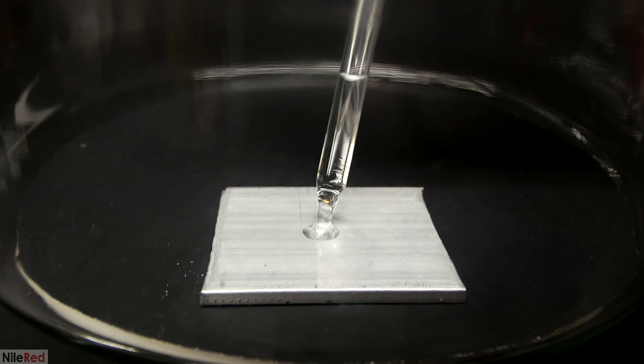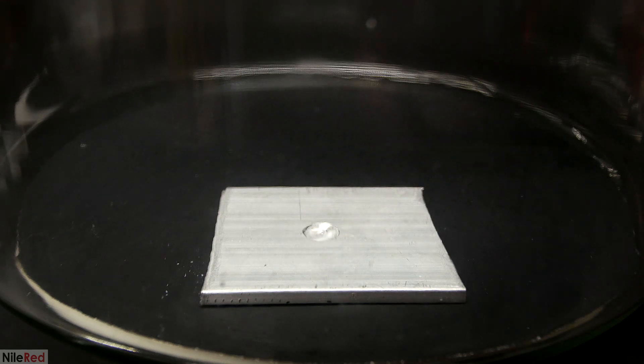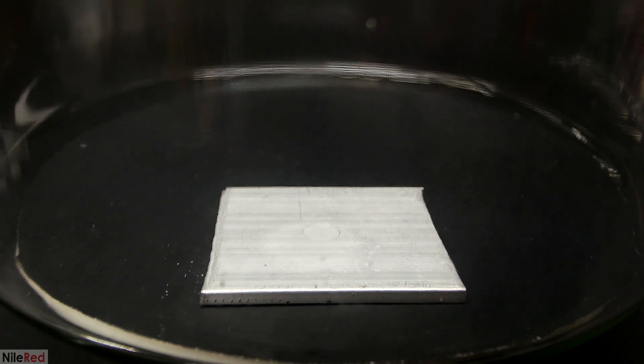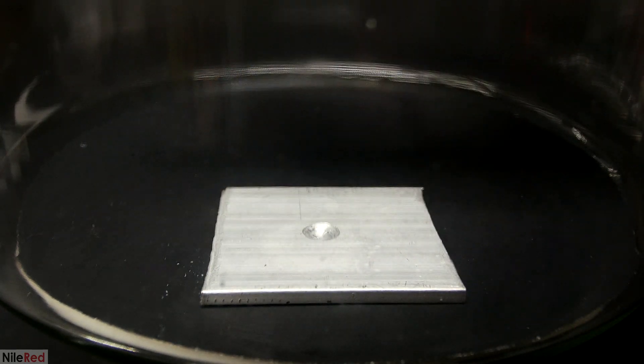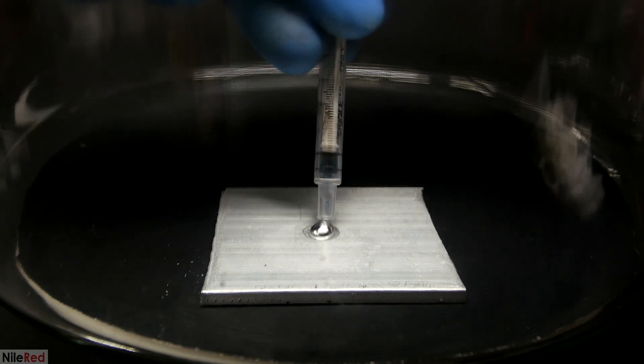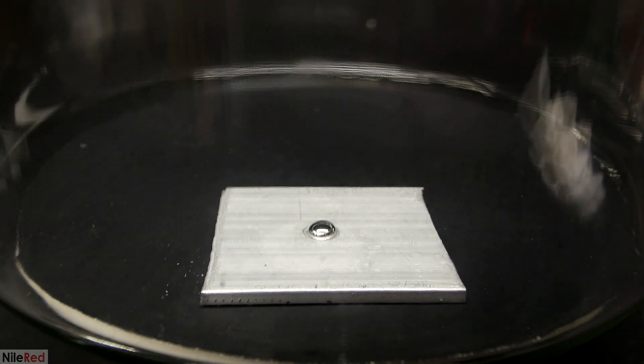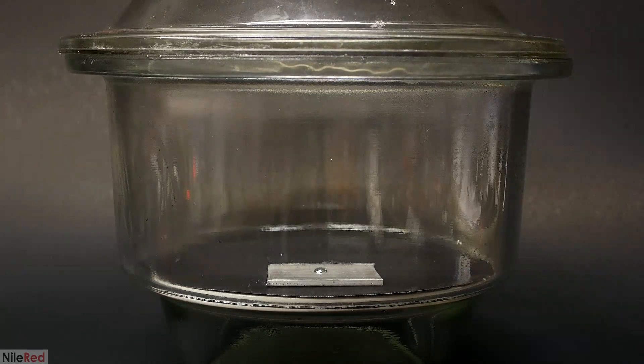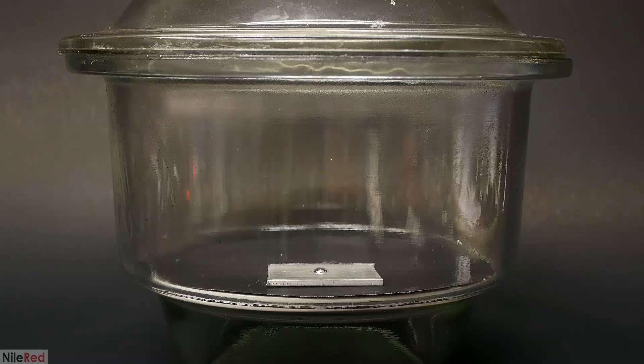So to test this out, I need to run it in a vacuum chamber. The rest of the setup is exactly like before though. I drill a hole into an aluminum plate and I treat it with hydrochloric acid to get rid of the protective oxide layer. Then I quickly add the mercury and I close the chamber. I don't show it here, but I also attach my vacuum pump to an adapter at the top.